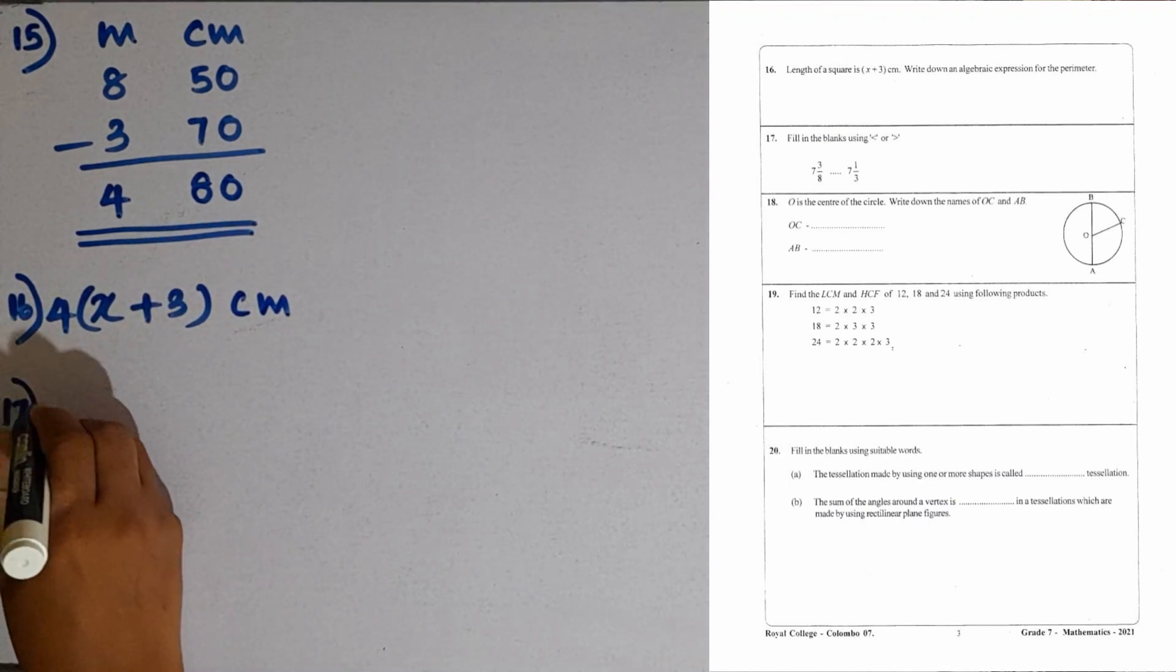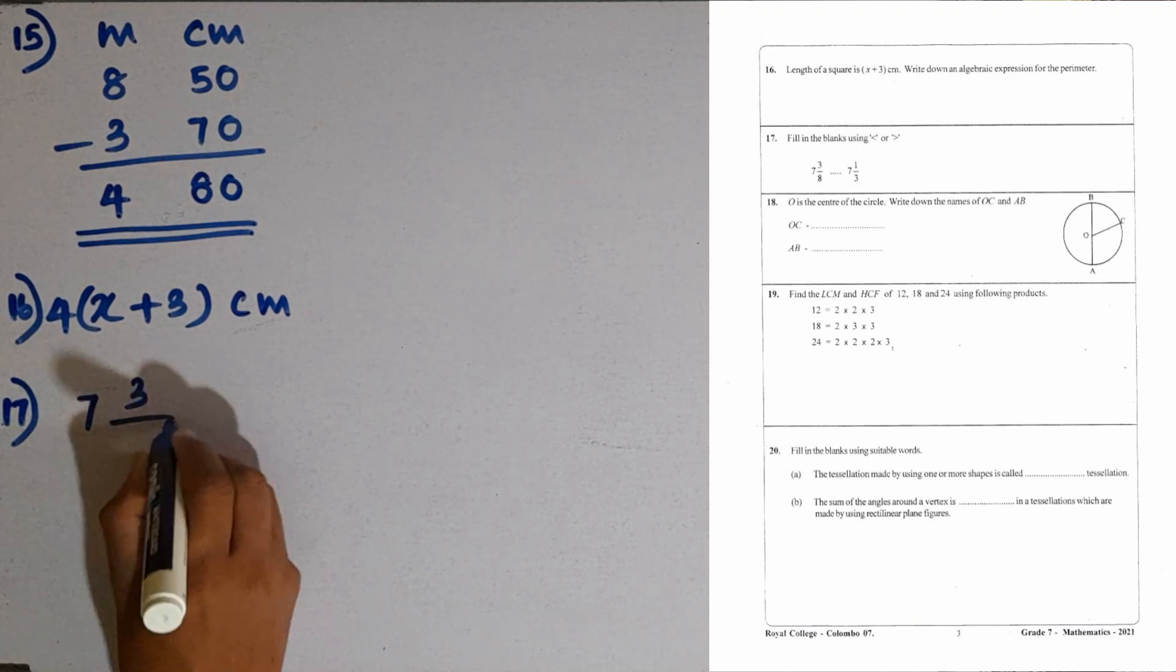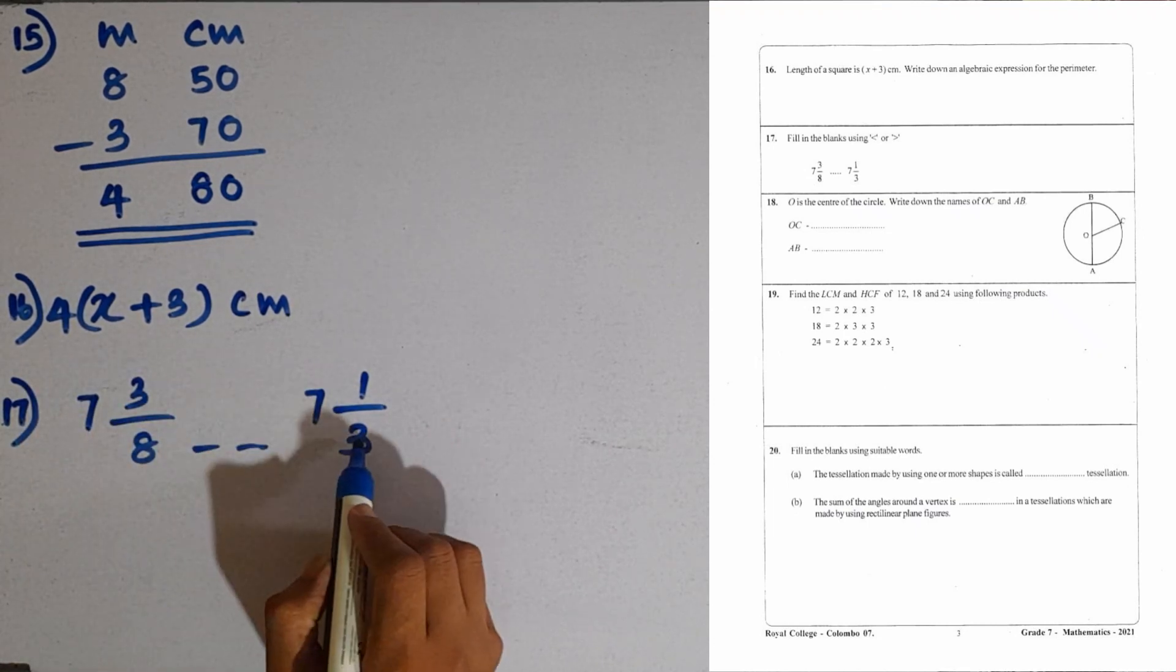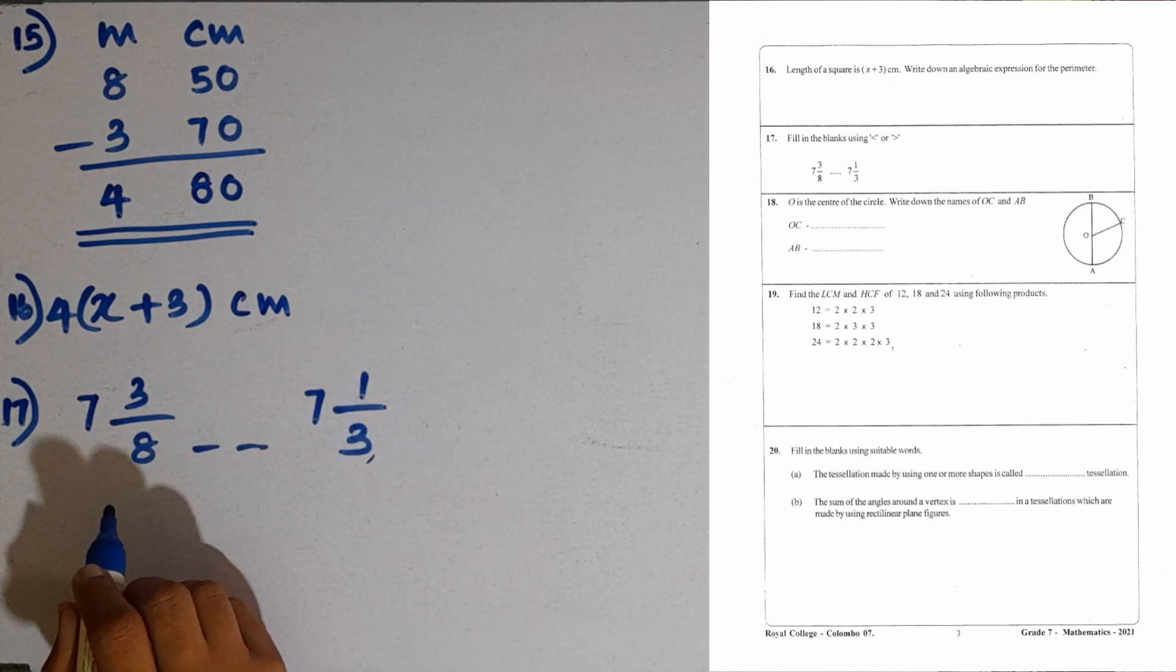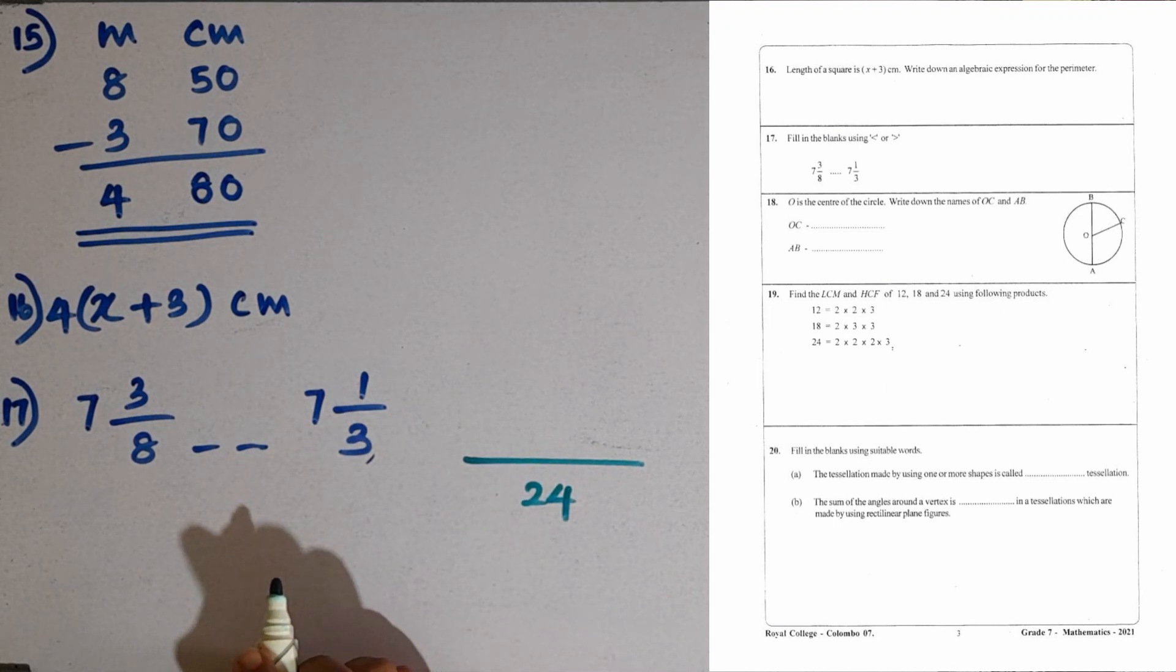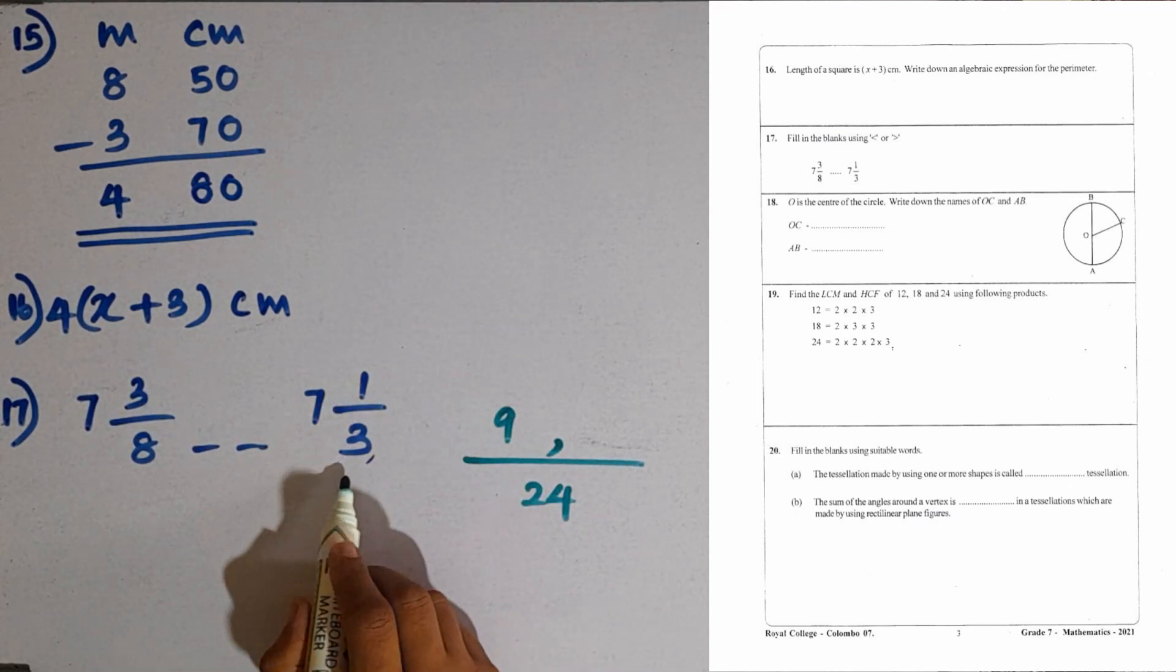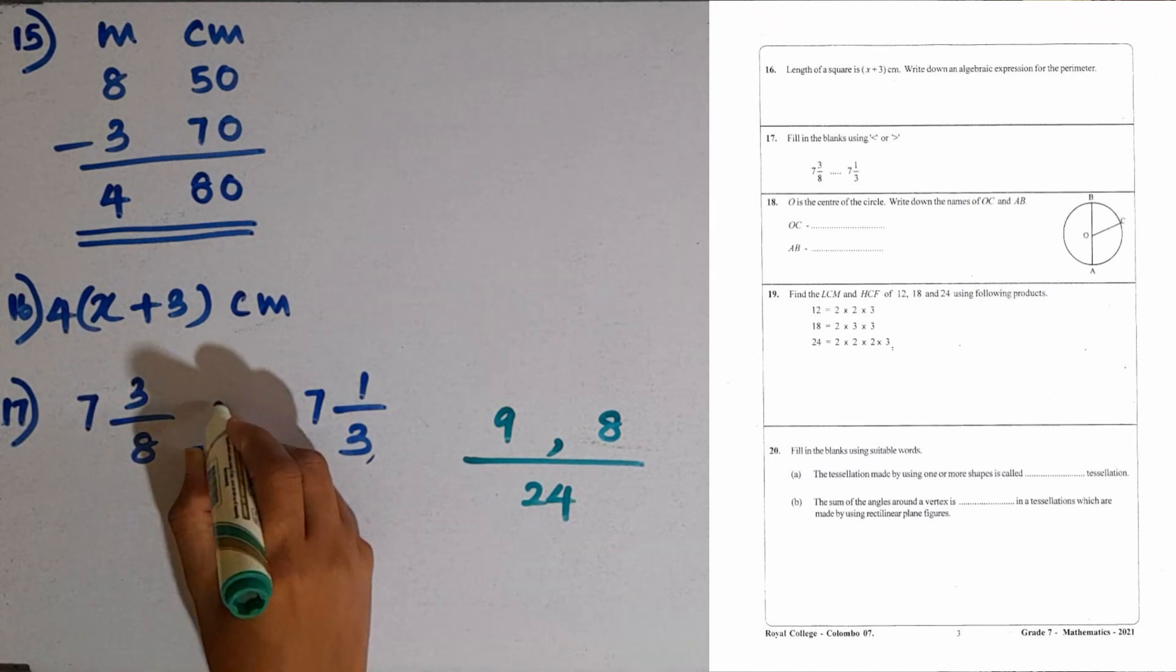Then question number 17. Fill in the blanks using less than or greater than. 7 and 3 over 8, the other side 7 and 1 over 3. As both are mixed numbers and the whole number part is equal here, we can compare the two fractional parts. Out of the fractions 3 over 8 and 1 over 3, what is the larger one? We can compare them by using equal fractions. The common denominator is 24 here. The first fraction can be multiplied by 3, 3 times 3 is 9. Then the second one by 8, 8 times 3 is 24, 8 times 1 is 8. So this one is the larger one, so we can use this sign.